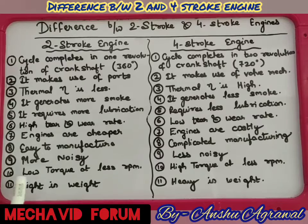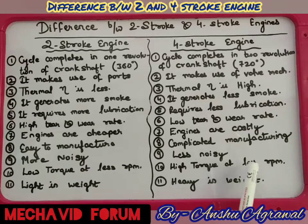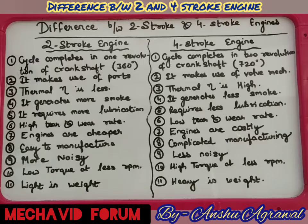Two-stroke engines produce low torque at low RPM, while four-stroke engines produce high torque at low RPM. At lower RPM, two-stroke engines produce less power output, whereas a four-stroke engine can deliver more torque even at lower RPM. As RPM increases, the torque of a four-stroke engine continues to grow.